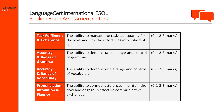Candidates are assessed in terms of four criteria. First, task fulfilment and coherence — the candidate's ability to manage the tasks adequately for the level and link utterances into coherent speech. Second, accuracy and range of grammar — the candidate's ability to demonstrate a range and control of grammar. Third, accuracy and range of vocabulary — the ability to demonstrate a range and control of vocabulary. And lastly, pronunciation, intonation and fluency, which measures the candidate's ability to connect utterances, maintain the flow, and engage in effective communicative exchanges.